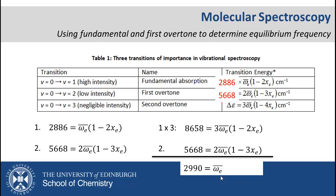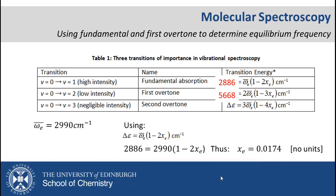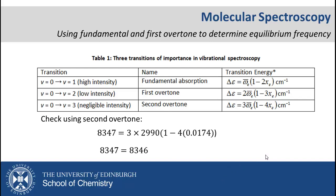Substituting this back into either of the original equations allows us to calculate the anharmonicity constant, and this value returns as 0.0174. Since we are given a third piece of information that we didn't use, we could check our values using the second overtone. Substituting the values in returns 8346 wave numbers, which is almost what was provided.